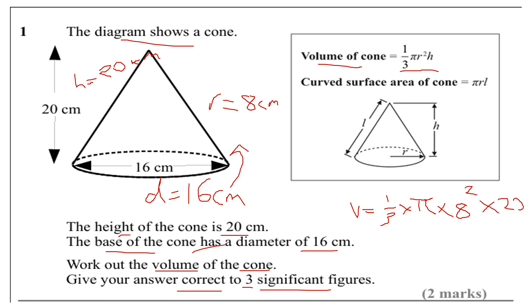8 squared is 64. 64 times 20 is 1,280, divided by 3. So volume equals 1,280 thirds π.